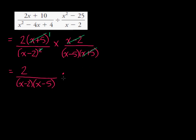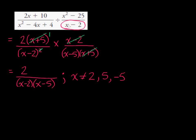We need to remember to state restrictions. We know that x cannot equal positive 2, and x cannot equal positive 5, because neither of these factors can equal 0. We also need to consider anything that was once in the denominator. This factor x plus 5 means we don't want an x value of negative 5, because that would make the denominator 0. And x minus 2, in the original question, was once part of the denominator, so we've already stated that x cannot equal positive 2.